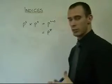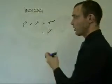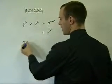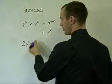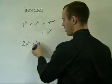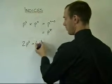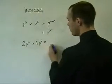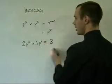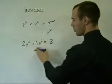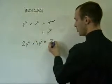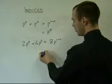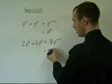If we were to make this a little bit more complicated and have coefficients, numbers before the letters, for example 2 times p to the 3 times 4 times p to the 6, we first of all start off by multiplying the numbers together, 2 times 4, which is 8, and then p to the 3 times p to the 6, which is p to the 3 plus 6, or 8p to the 9.